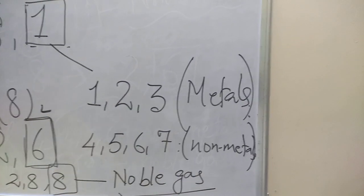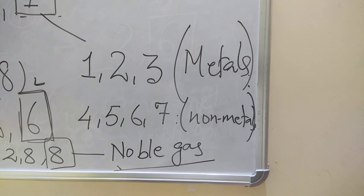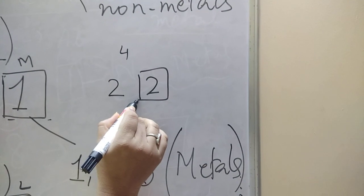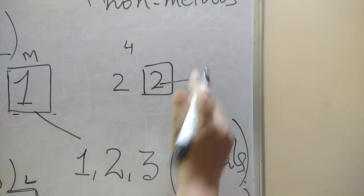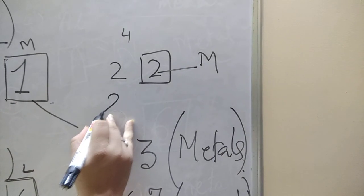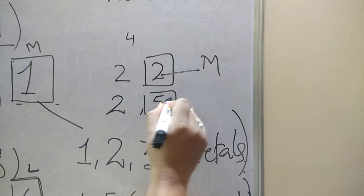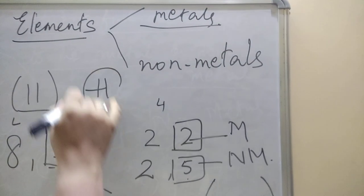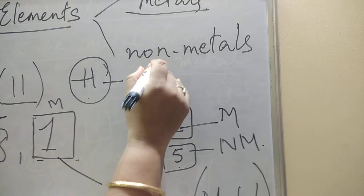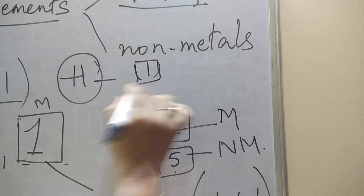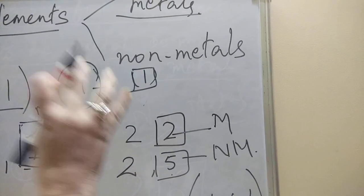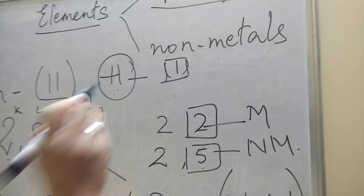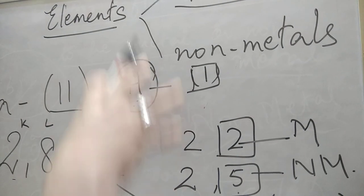Now it will be easy, children. Whenever you see any element, remember its atomic number — from 1 to 20 for standard 8. Distribute the electrons: if the last shell has 1, 2, or 3, it is a metal; if it has 5, it is a non-metal. Hydrogen is an exceptional case — atomic number 1, last shell has 1, but it is a non-metal because all its physical properties fall under non-metals. For any doubt about hydrogen, see my previous video.